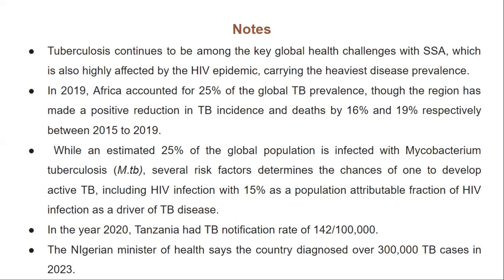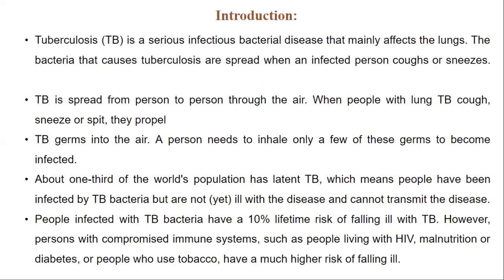In the year 2020, Tanzania had a tuberculosis notification rate of 142 persons per 100,000 persons — meaning that in every 100,000 population of Tanzania, 142 were found to be infected with tuberculosis. However, the Nigerian Minister of Health recently stated that the country has diagnosed over 300,000 tuberculosis cases in the previous year, 2023.